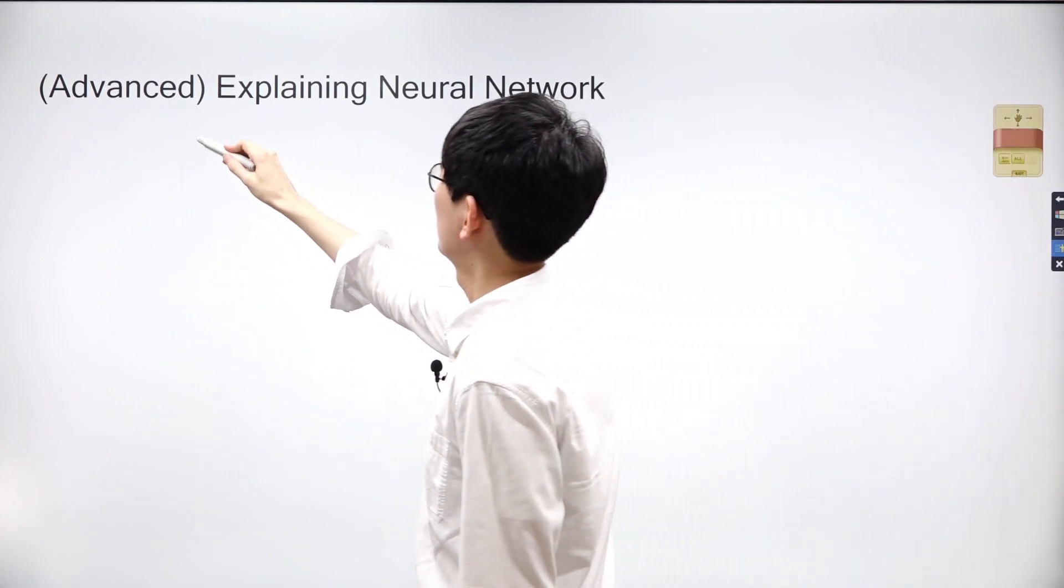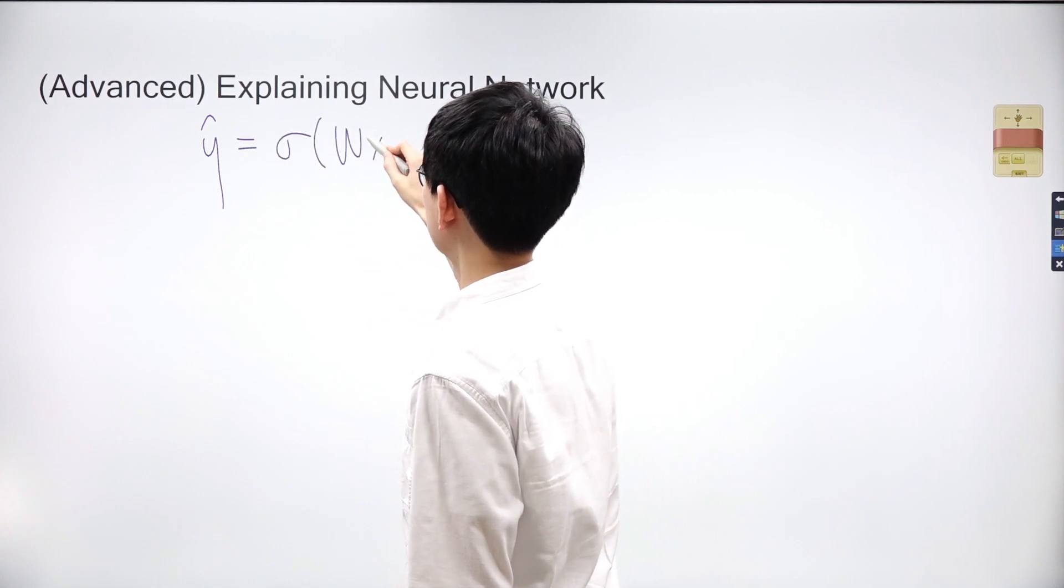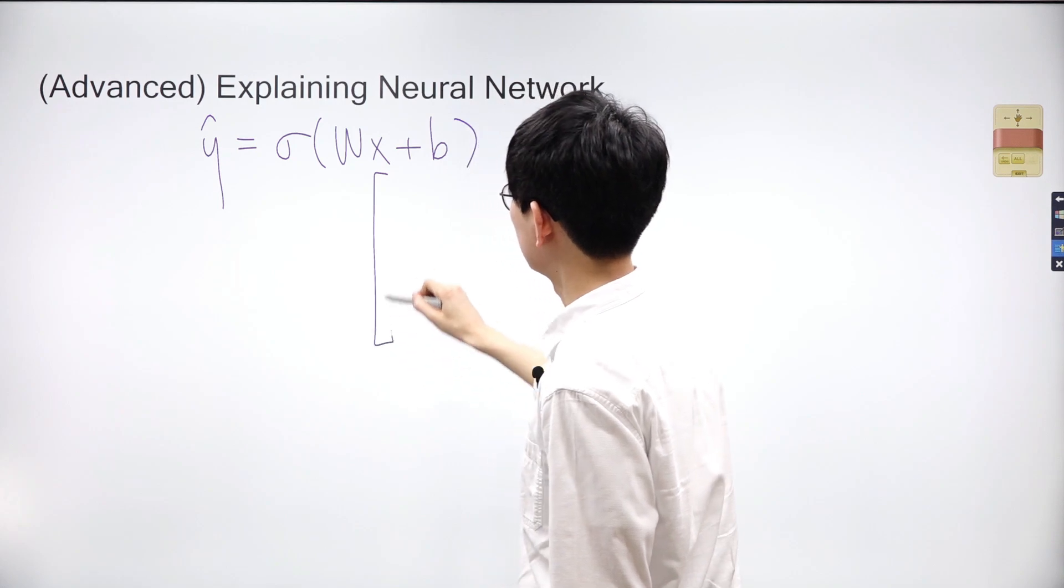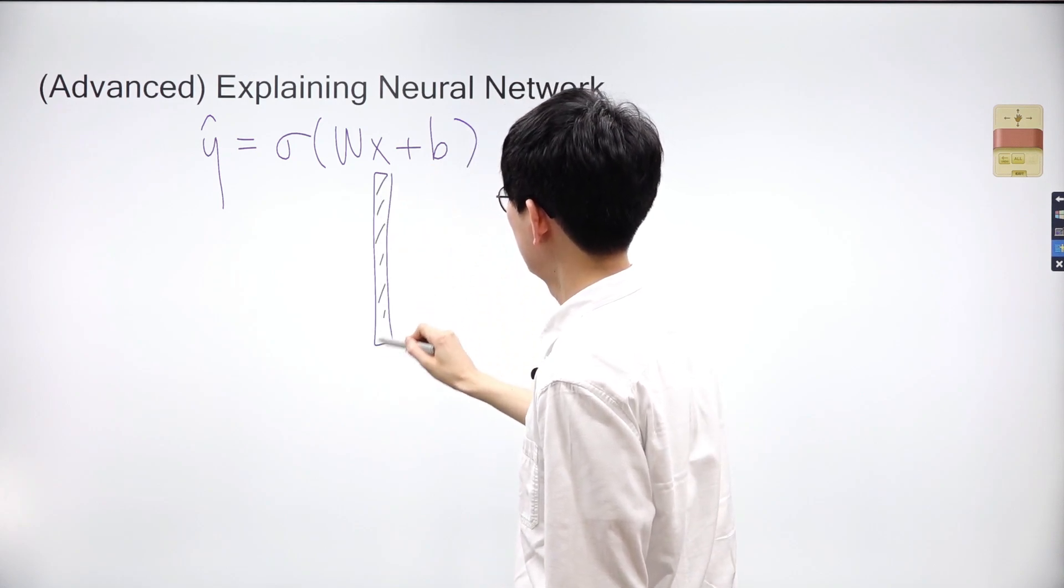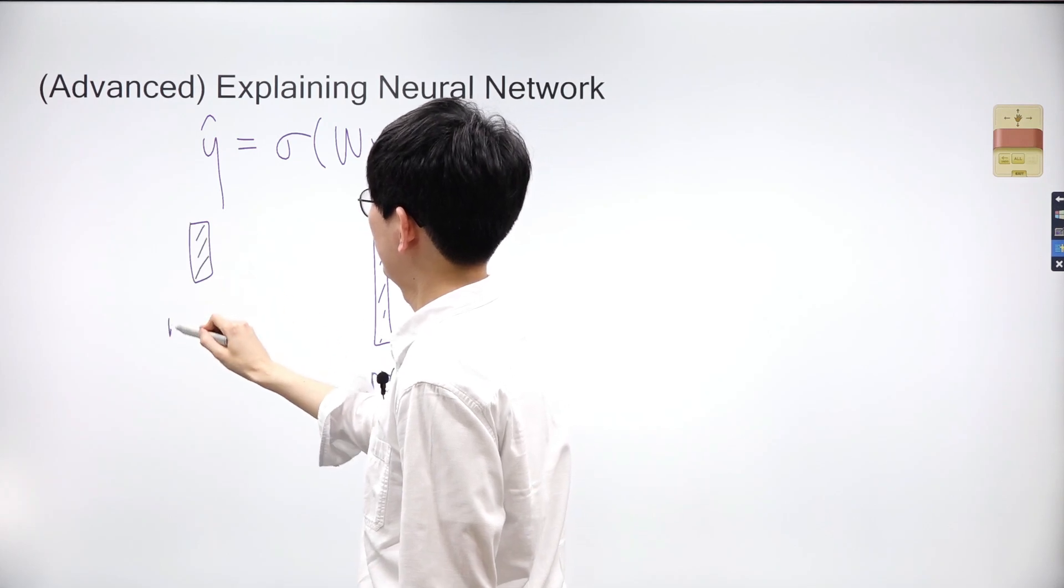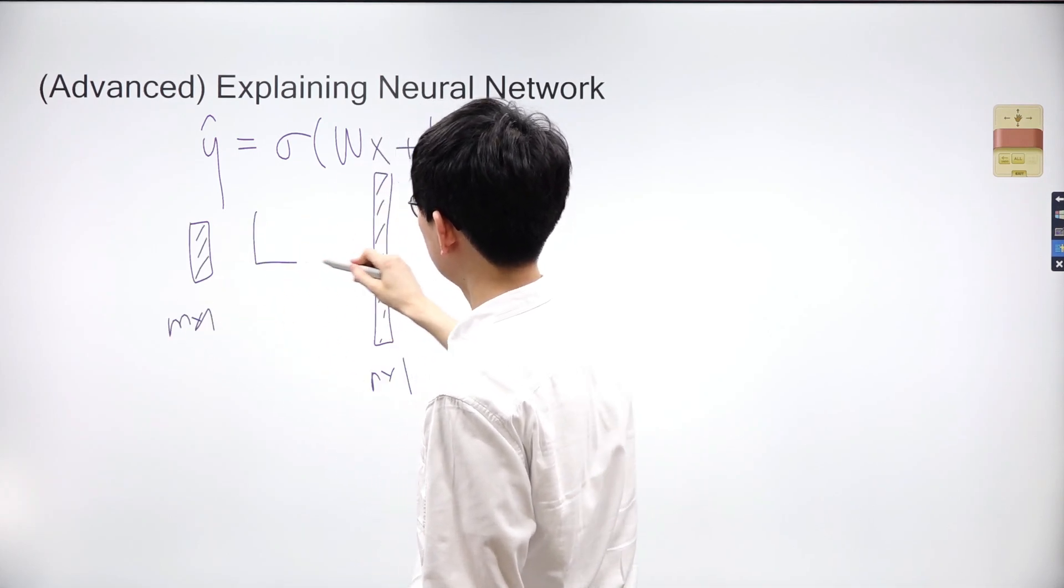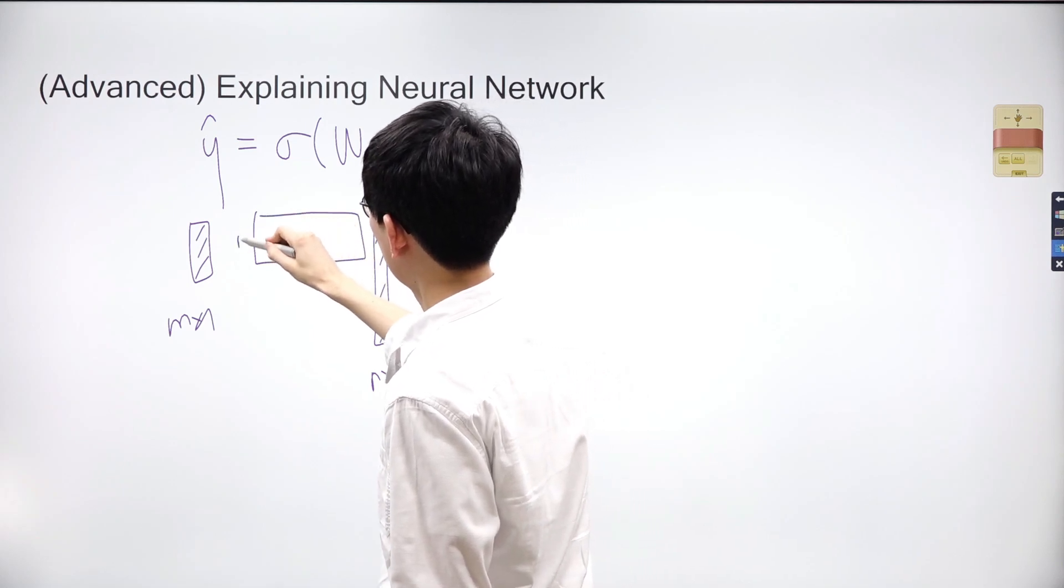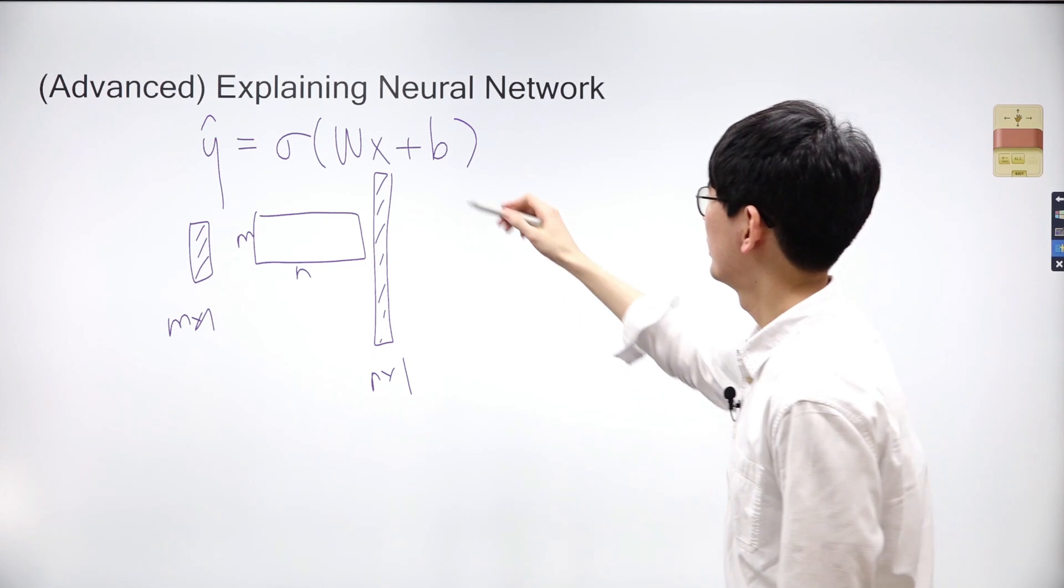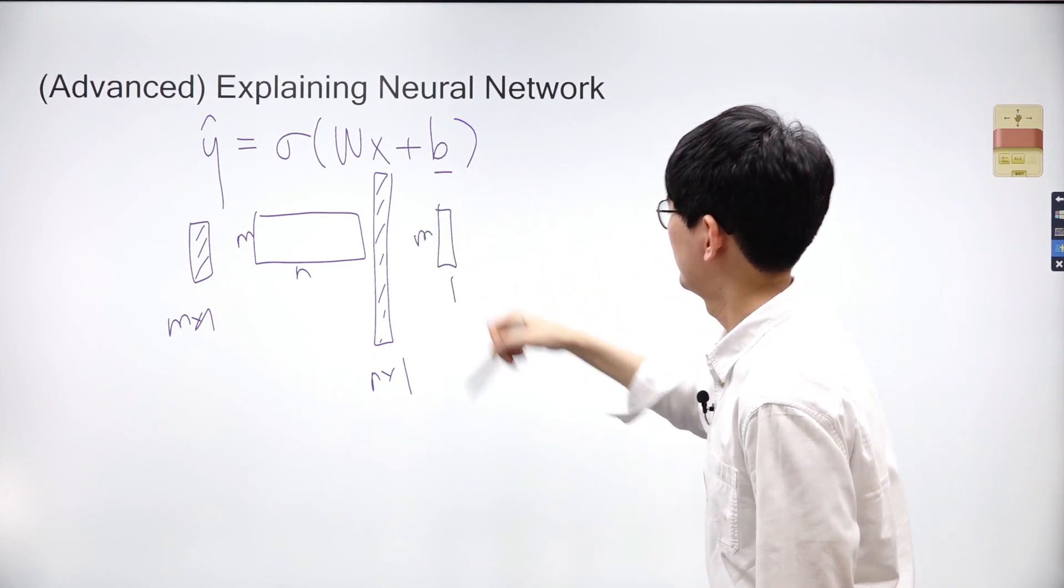Let's revisit the equation from the previous slide: Y-hat equals sigma(Wx plus B). The length of vector X is very long since its dimension is N by 1. On the other hand, the vector Y-hat is shorter compared to X with its dimension being M by 1. Meanwhile, W is an M by N matrix, and B is also a vector in R^m, specifically an M by 1 vector.